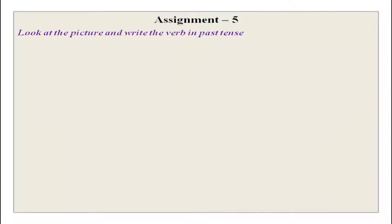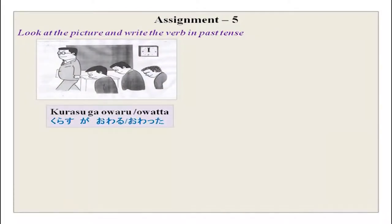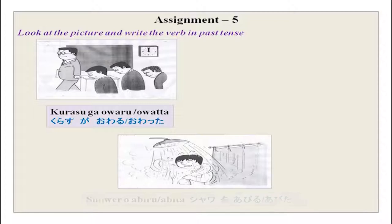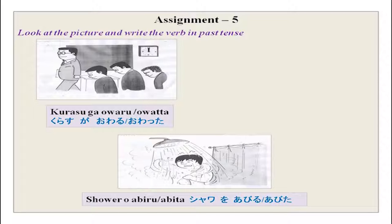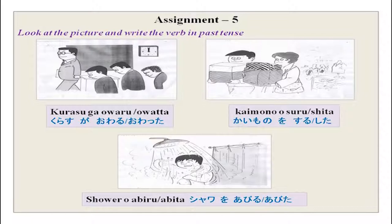Look at the picture and write the verb in past form. Sensei is leaving — 'Kurasu ga owaru,' past form is owatta. Someone is taking a bath — 'Shawa wo abiru,' past form is 'shawa wo abita' or 'abimashita.' Doing a lot of shopping — 'Kaimono wo suru,' past form is 'kaimono wo shita.' That is group 3.